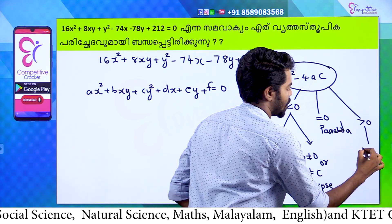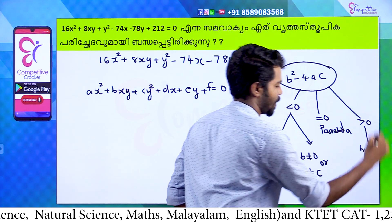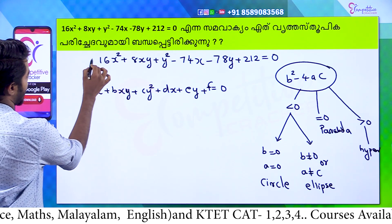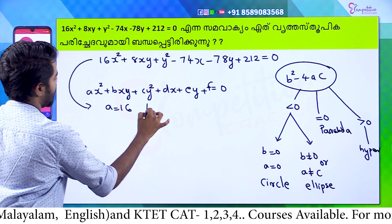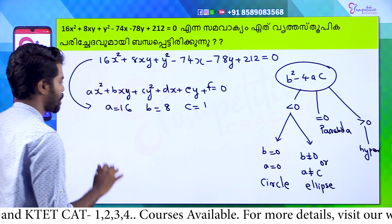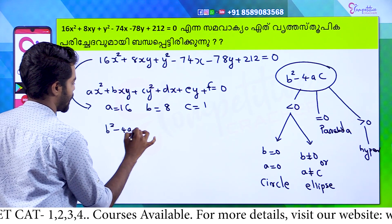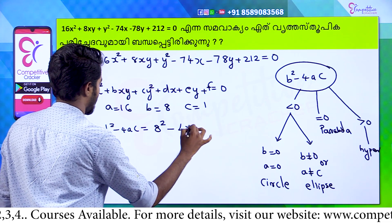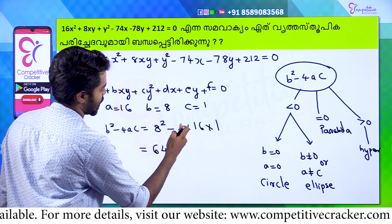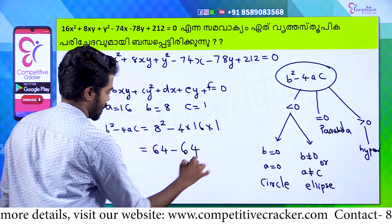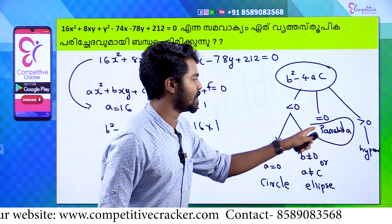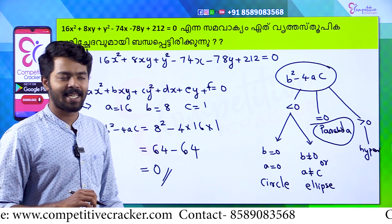If b² − 4ac is greater than 0, the equation is a hyperbola. Now, we have the conditions. We are going to apply it. b² − 4ac: let's compute it. b² − 4ac equals 8² − 4·(14)·(1) = 64 − 56 = 8 — wait, b² − 4ac = 4·14, that equals 0. So b² − 4ac equals 0, and we can identify the conic from that equation.